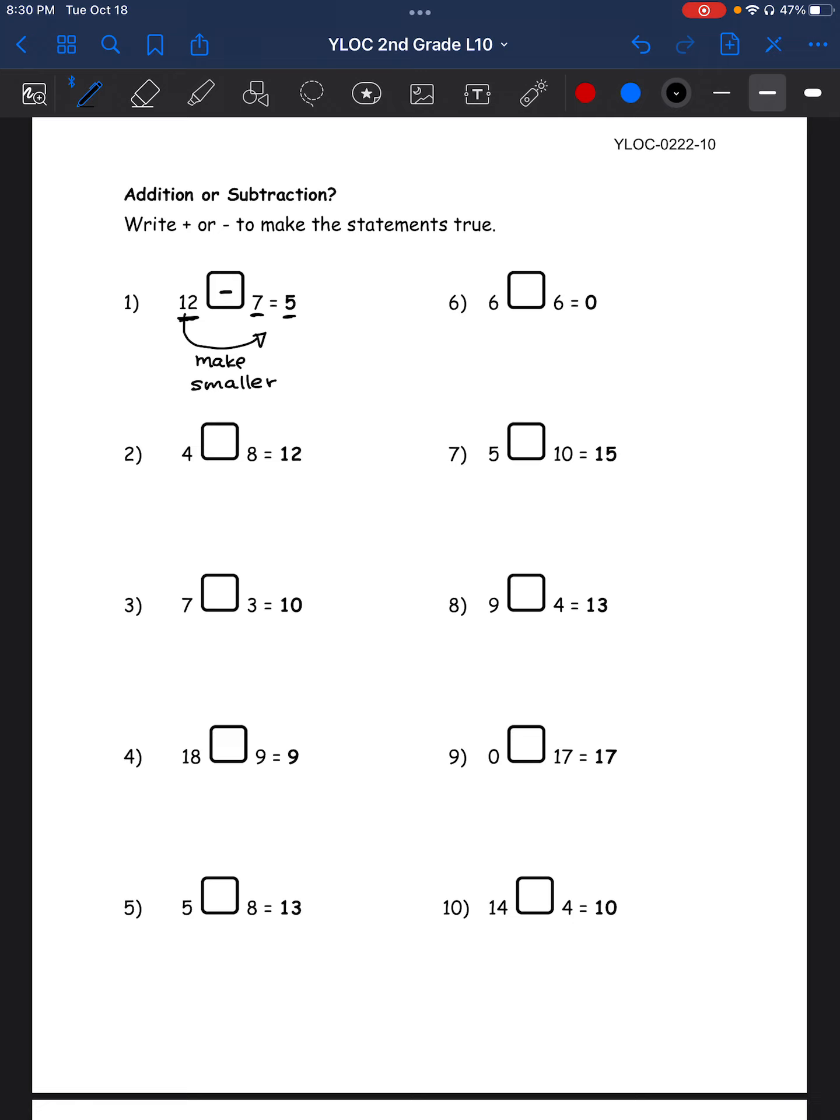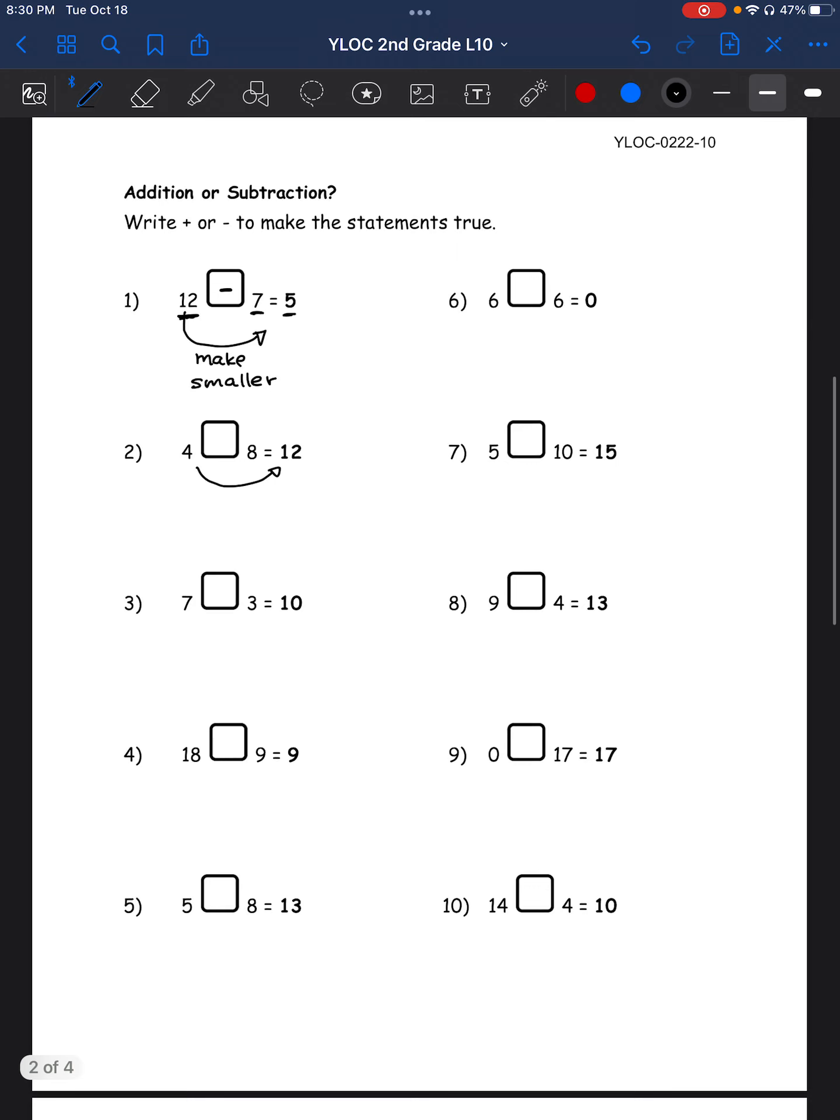Let's see here. Next, number 2. So what's this relationship? Well, 4 and 12. 12 is bigger than 4, right? So we have to make it larger. So if we have to make it larger, it's an addition equation, right? So 4 plus 8 equals 12.